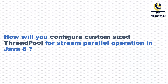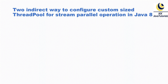Before proceeding, Java does not provide any direct mechanism to control the number of threads and thread pool used by the parallel method in the Stream API. However, there are two indirect ways to configure the same, and we'll discuss both with practical examples.